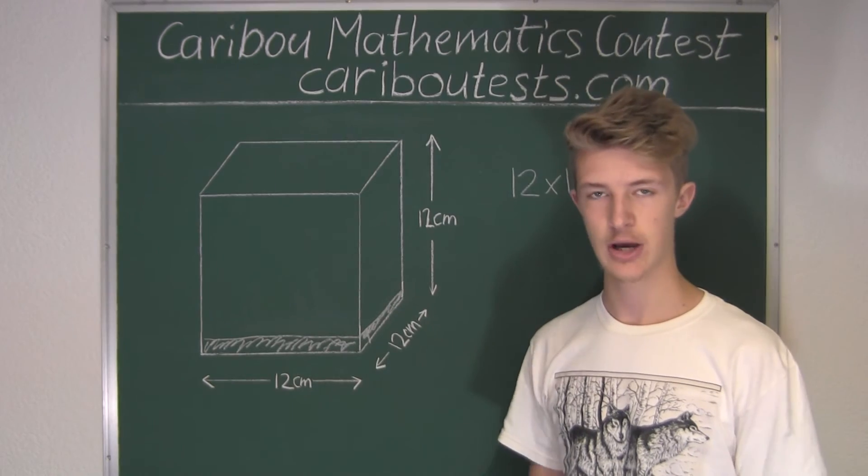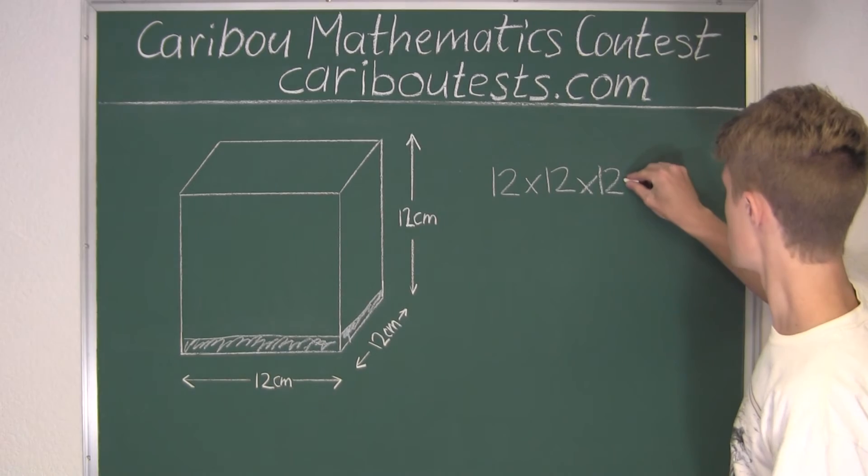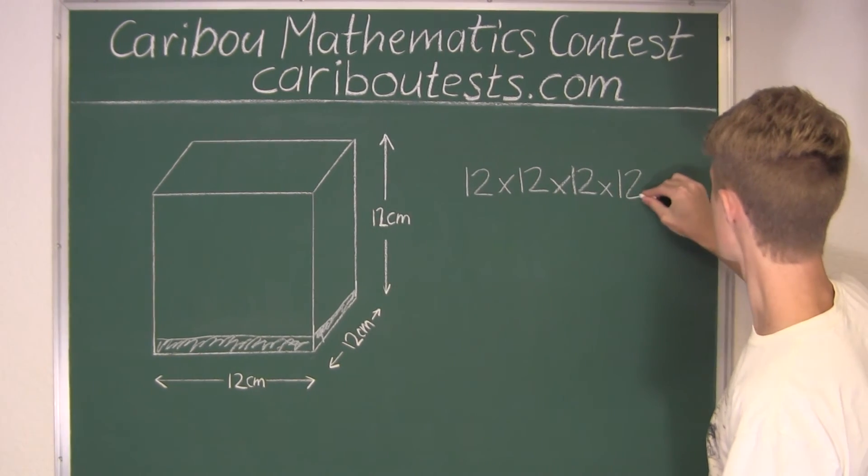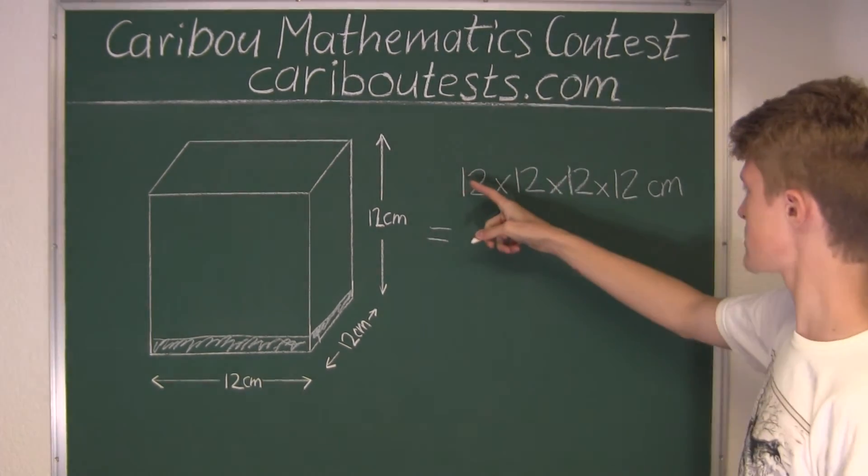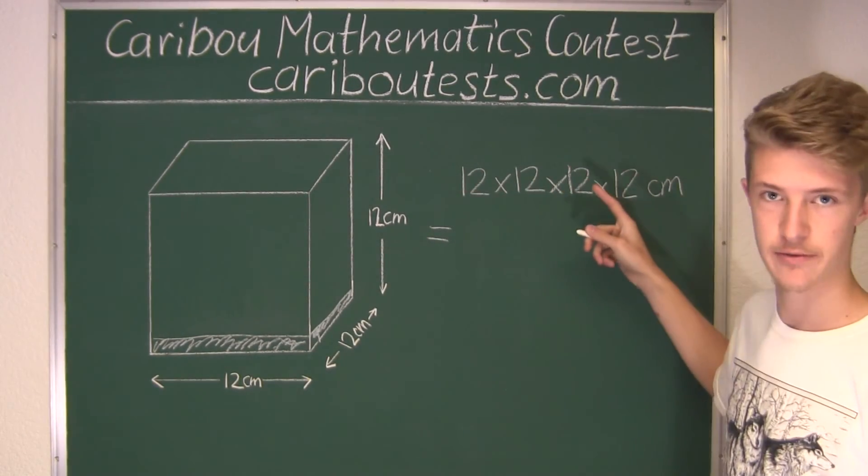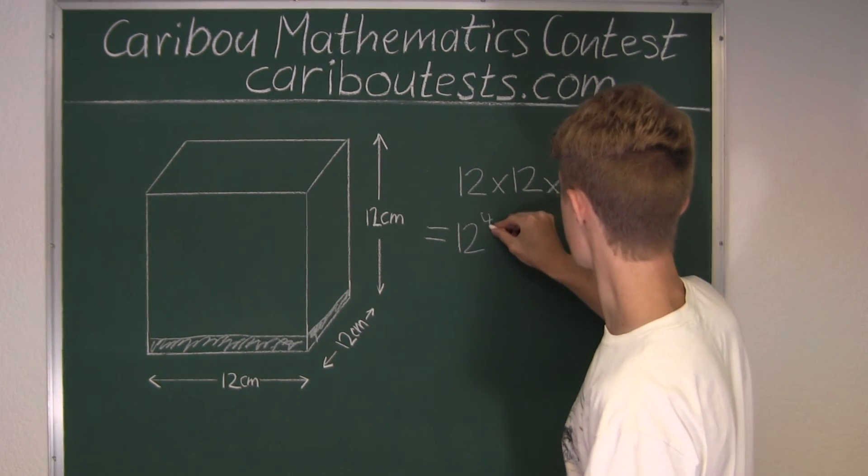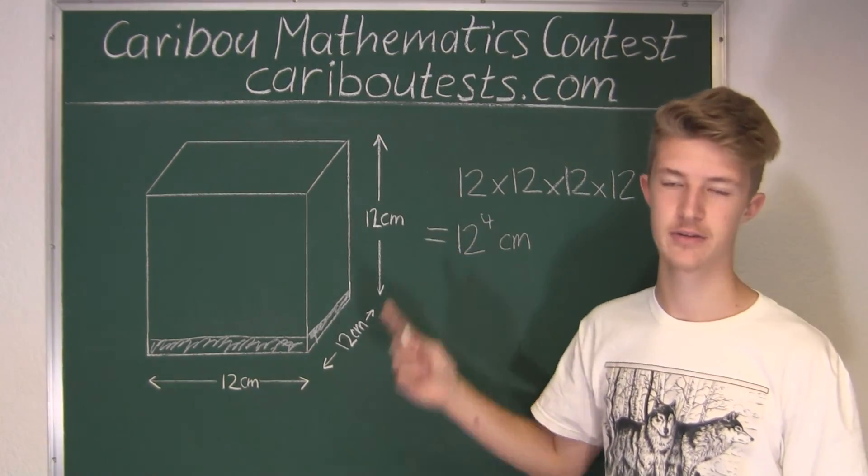And since each edge is 1 centimeter, we have then 1 times 12 is another 12, but now we have 12 centimeters. Okay, and here since we have four factors of 12, it must be 12 to the power of 4 centimeters. And that must be the total length of all the edges of the smaller cubes.